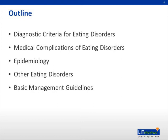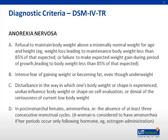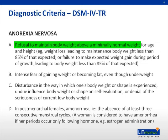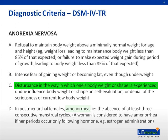Anorexia nervosa. The DSM-IV criteria lists four key features of AN: a refusal to maintain a minimally normal body weight, an intense fear of weight gain, body image disturbance, and amenorrhea.